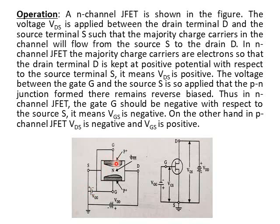Thus, in N-channel FET, the gate G should be negative with respect to the source S, meaning VGS is negative. On the other hand, in P-channel JFET, VDS is negative and VGS is positive.